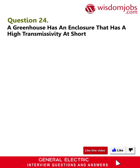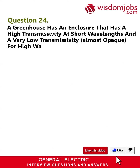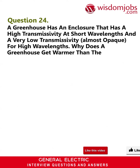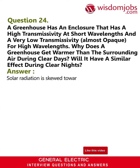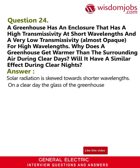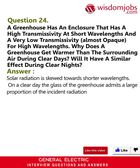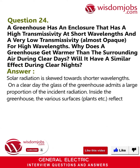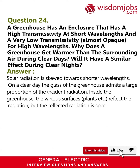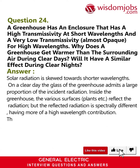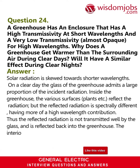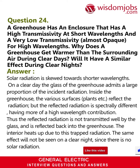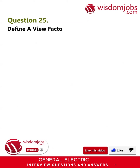Question 24: A greenhouse has an enclosure with high transmissivity at short wavelengths and very low transmissivity (almost opaque) at high wavelengths. Why does a greenhouse get warmer than the surrounding air during clear days? Will it have a similar effect during clear nights? Answer: Solar radiation is skewed towards shorter wavelengths. On a clear day, the glass admits a large proportion of incident radiation inside. The various surfaces — plants, etc. — reflect the radiation, but the reflected radiation is spectrally different, having more of a high-wavelength contribution. Thus the reflected radiation is not transmitted well by the glass and is reflected back into the greenhouse. The interior heats up due to the trapped radiation. The same effect will not be seen on a clear night since there is no solar radiation.